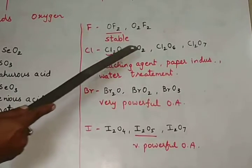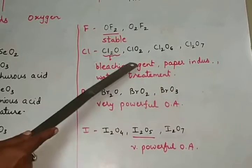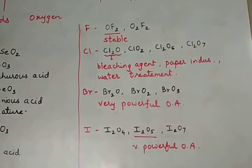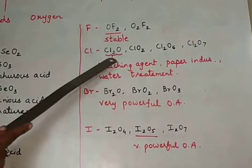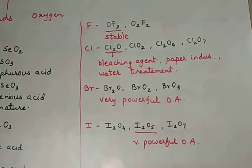You can calculate the oxidation states of chlorine in each of the oxide. Each oxygen is minus 2. So from that you can calculate oxidation state of chlorine in each of the oxides.